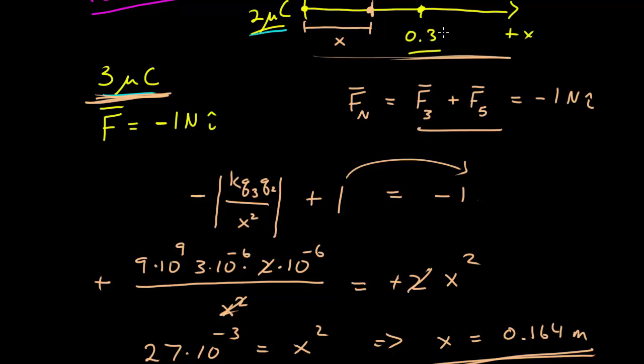In summary, in one-dimensional Coulomb's law problems we calculate the magnitudes of all forces using Coulomb's constant, the charges, and the distances between charges. Then in one dimension we keep track of the directions of the force vectors using plus and minus signs.